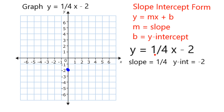Then it has a slope of 1 over 4, meaning a rise of 1 every time it runs or goes forward 4. So to find additional points, I'm going to start from my y-intercept, and I'm going to go up 1 and over 1, 2, 3, 4. And I'm going to put another point there.